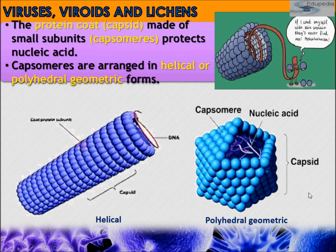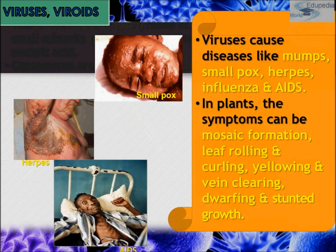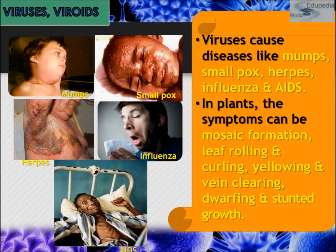Viruses cause diseases such as mumps, smallpox, herpes, influenza, and AIDS in animals. In plants, symptoms caused by viruses include mosaic formation, leaf rolling, curling, yellowing, vein clearing, dwarfing, and stunted growth.